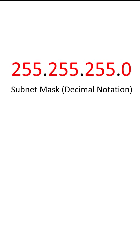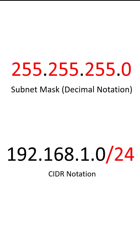There are two ways to show subnetting. One is called a subnet mask, which is the format you see here. The other is called CIDR notation, which is the format you see here with the slash 24 at the end of it. Both of these represent a very common subnet — the slash 24 network, or 255.255.255.0.